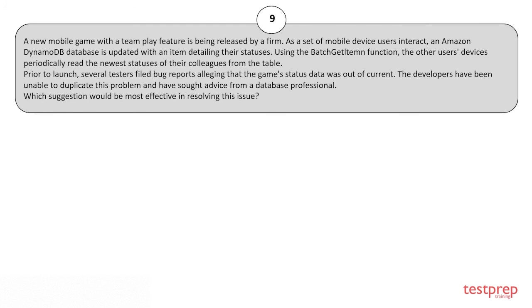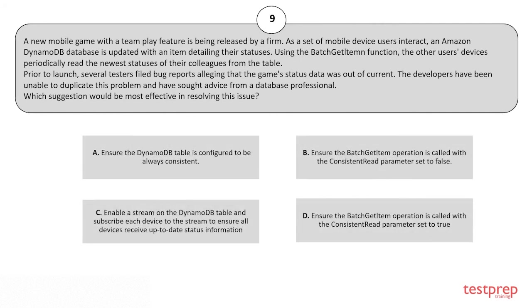Question 9: A new mobile game with a team-play feature is being released. As mobile device users interact, an Amazon DynamoDB database is updated with an item detailing their statuses using the BatchGetItem function. Other users' devices periodically read the newest statuses of their colleagues from the table. Prior to launch, testers filed bug reports alleging that the game status data was out of date. Which suggestion would be most effective? Options: A) Ensure the DynamoDB table is configured to be always consistent. B) Ensure the BatchGetItem operation is called with a ConsistentRead parameter set to true. The correct answer is option B.